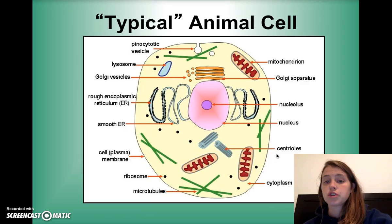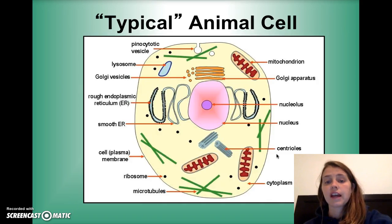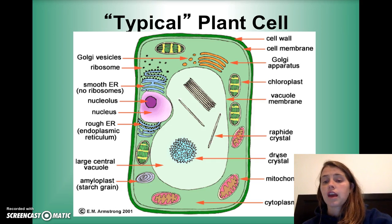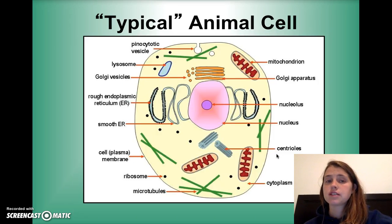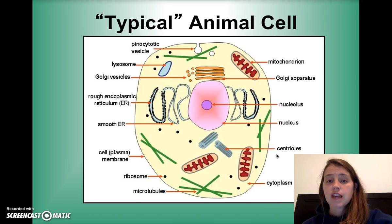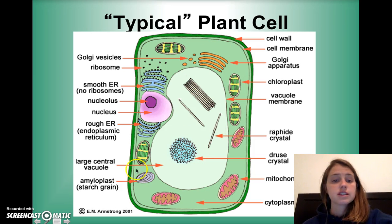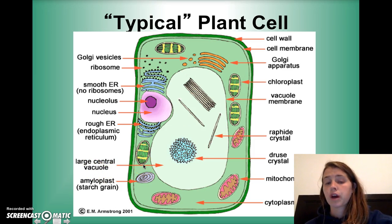Here's the typical plant cell. If you look at both, I'd like you to quickly jot down in your interactive notebook how they are alike and how they are different. Hopefully you've noticed there is something very large in the plant cell, and that the plant cell has kind of two boundaries. That large thing in the middle is not the nucleus — it's something called a vacuole, which we'll talk about in a second.